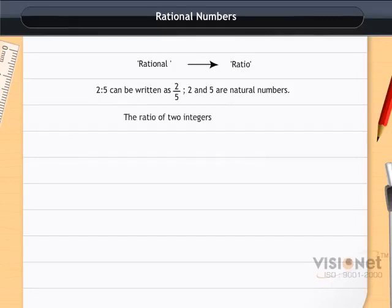Similarly, the ratio of two integers p and q, where q is not equal to 0, that is, p is to q, can be written in the form p by q. This is the form in which rational numbers are expressed.